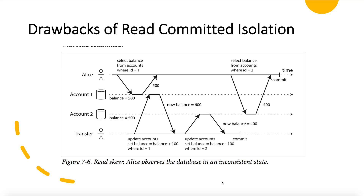Let's start with the drawbacks of read committed isolation. Read committed isolation prevents reading the incomplete results of transactions and it also prevents concurrent writes from getting mixed. These are stronger guarantees than we can get from a system that has no transactions, but still there are plenty of ways in which we can have concurrency bugs when we use read committed isolation.